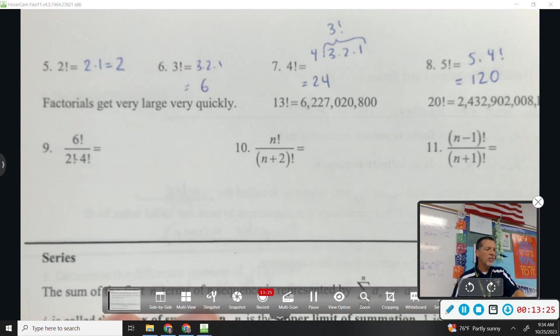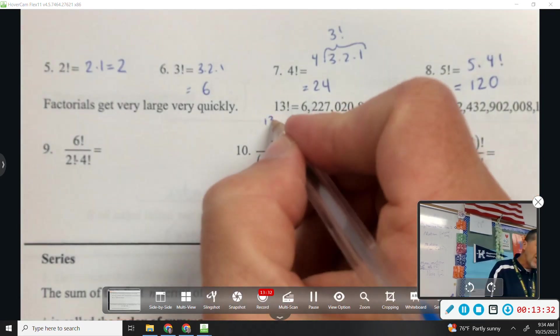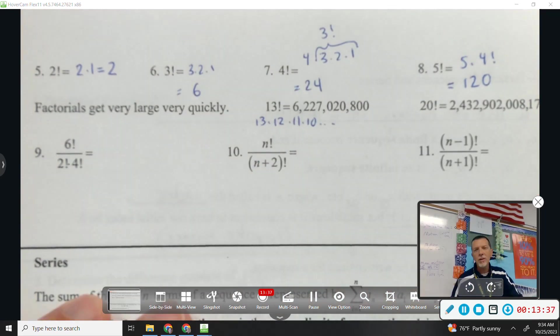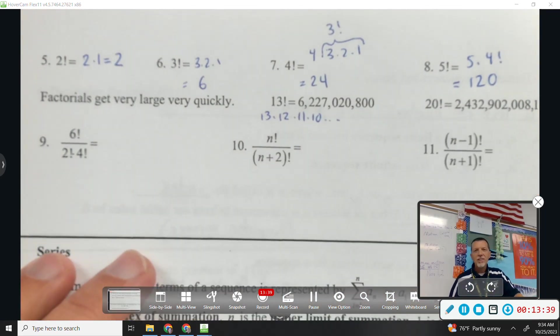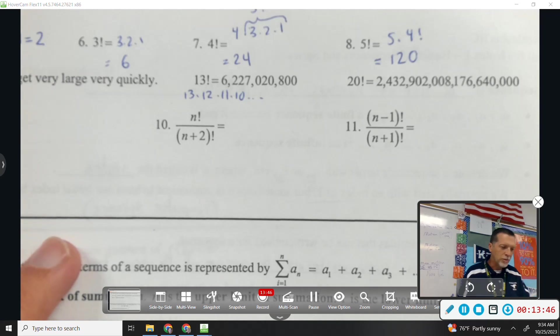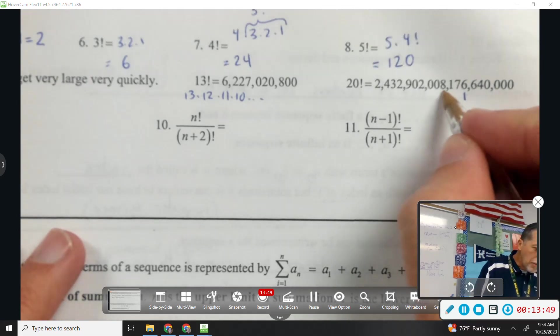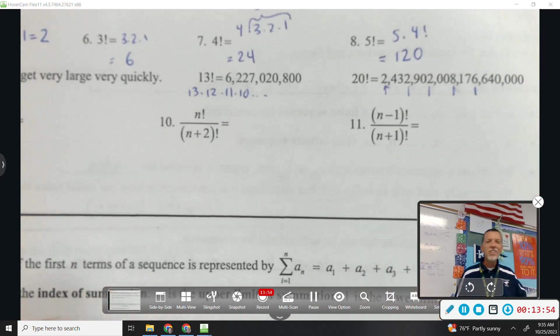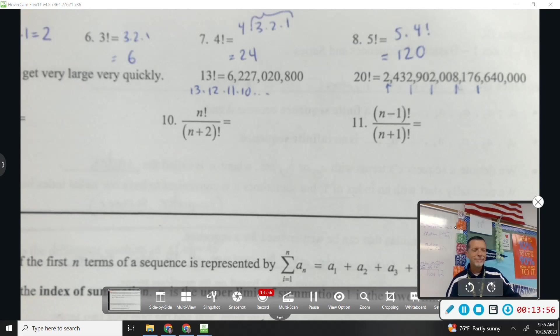5 times 20. 5 times 4. Factorials get very large very quickly. 13 factorial. Conceptually, it doesn't seem that bad. It's just 13 times 12 times 11 times 10 all the way down. And you end up with 6. That's not million. That's billion. 6 billion. And then 20 factorial would be million, billion, trillion, quadrillion, quintillion, I think. That's a lot.